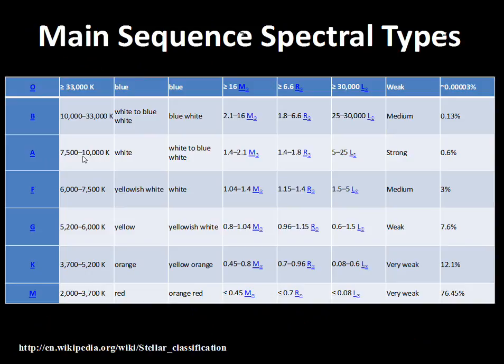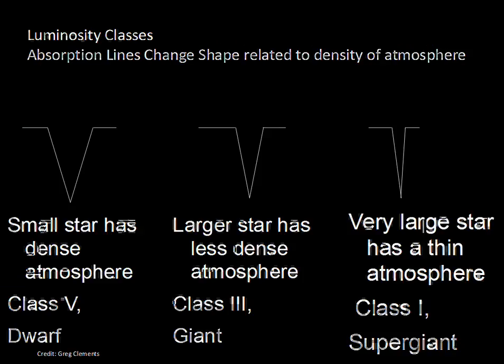We'll deal with dwarfs, giants, and supergiants. Astronomers study the absorption lines to get an idea of what elements are present, how abundant the elements are, and the temperature of the star. We can classify stars with the letter and number for temperature and also get a good idea of the density of the outer atmosphere to classify the size of the star.